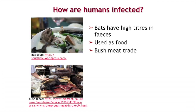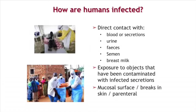Humans are now more frequently infected through direct contact with other humans, via blood or secretions — urine, feces, semen, vomit — all bodily fluids. Also through exposure to objects like blankets and surfaces contaminated with infectious secretions. This occurs through mucosal surfaces — for example, people touching their eyes, nose, and mouth — breaks in the skin, or parenterally through contaminated needles.